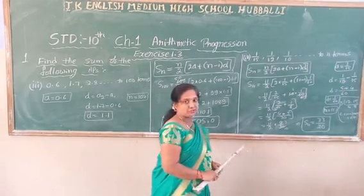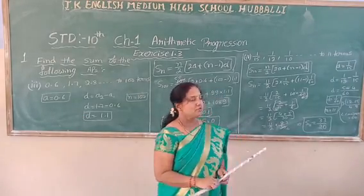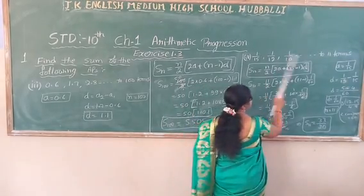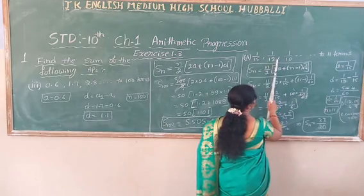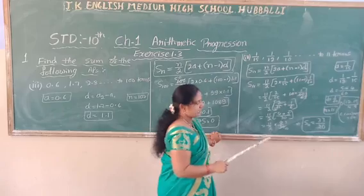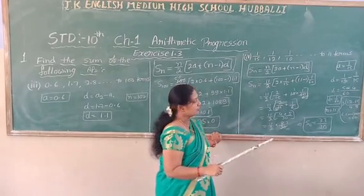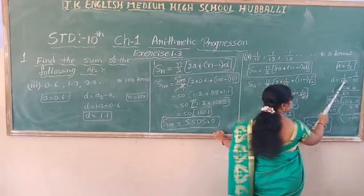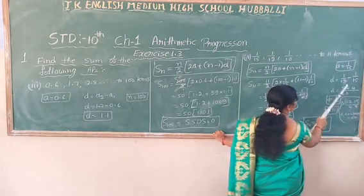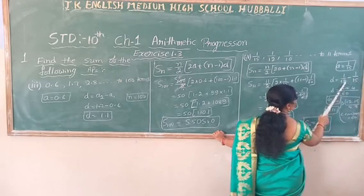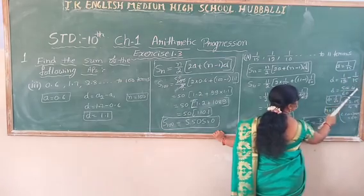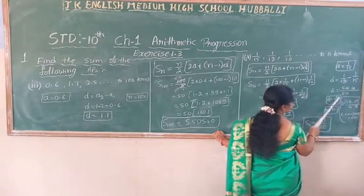The fourth question: the terms are in the form of fractions. Method is same but for fractions, to find d — the d value is in second term subtract first term. To subtract fractions, take the LCM. The LCM of 12 and 15 is 60. Multiply accordingly: numerator becomes 5, and by 4 it becomes 4 in the numerator. When you subtract: 5 minus 4 is 1 over 60. So d value is 1 by 60.